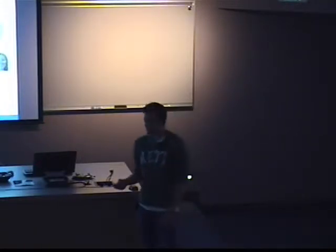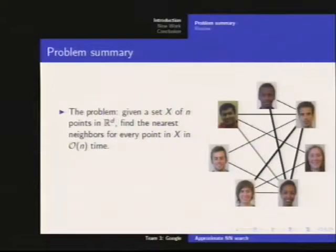Here's the nearest neighbor graph of some faces of people from our group. So here there's only seven data points, so you can just do brute force on this. But it's with two nearest neighbors, and the darker lines indicate where it goes both ways. So I'm very lonely over here. I have some nearest neighbors, but nobody likes me.